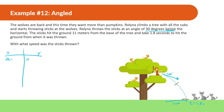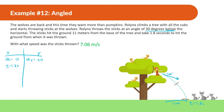Let's start with an X and Y chart. Acceleration: negative 10 in y and 0 in x. Time is the same for both: 1.8 seconds. And we know the displacement in x equals 11 meters from the base of the tree. That gives us three pieces of information in the x direction.